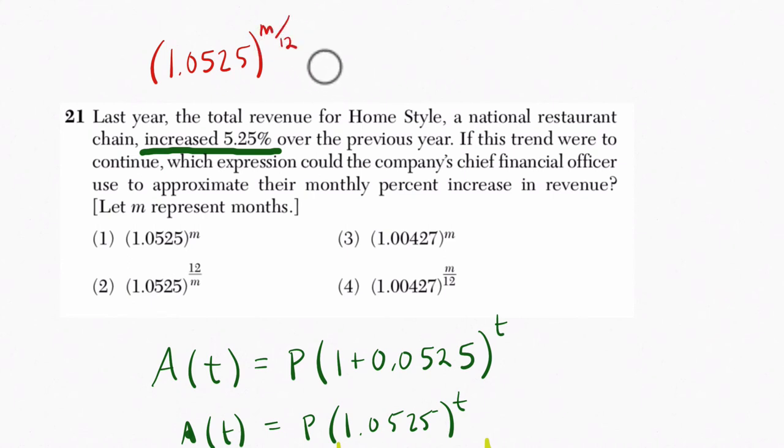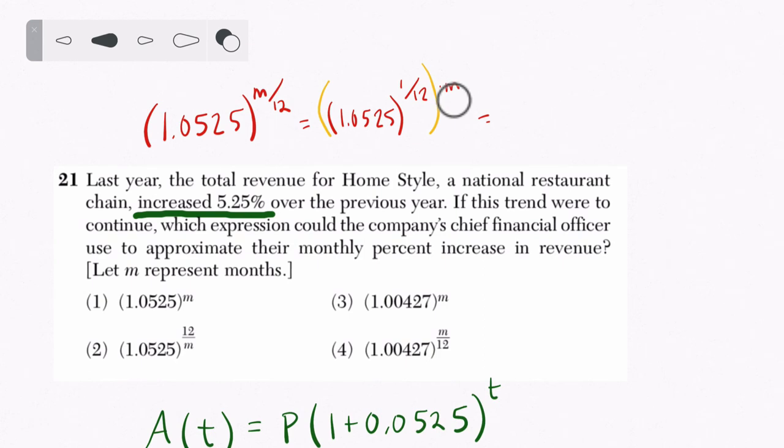They love this on the Regents. Here's what I mean. When you have m/12, that's the same thing as 1/12 times m. Those are equivalent statements. So really we can think of this as 1.0525 to the 1/12 to the m. And with exponents, these are being multiplied. We can apply them in any order. So if I take 1.0525 and raise that to the 1/12 power first, whatever number that is, and raise that to the m, it must be equivalent.